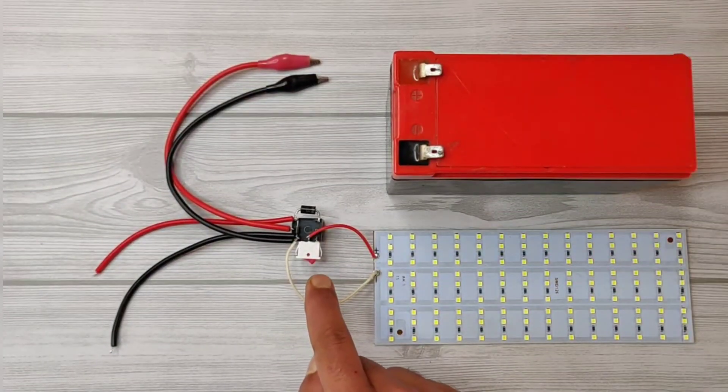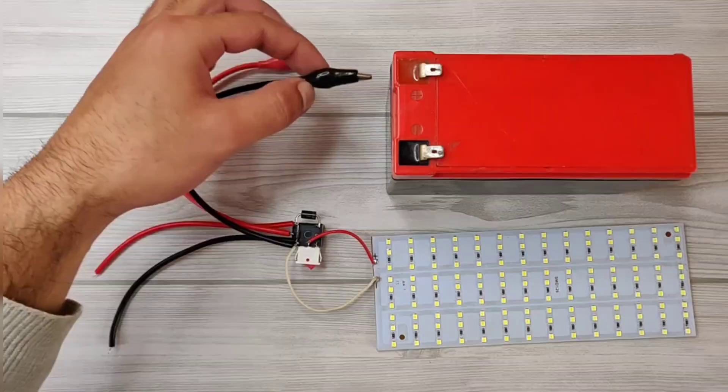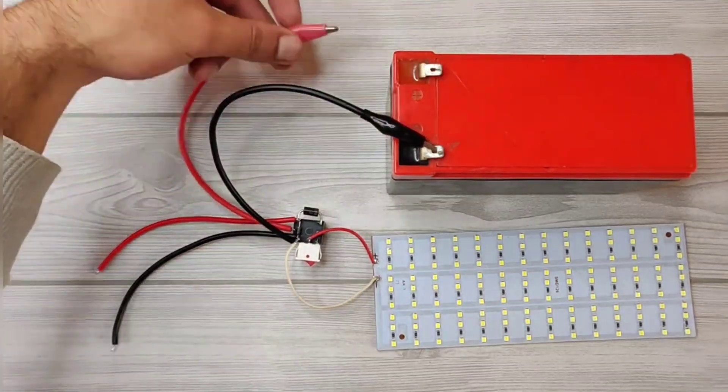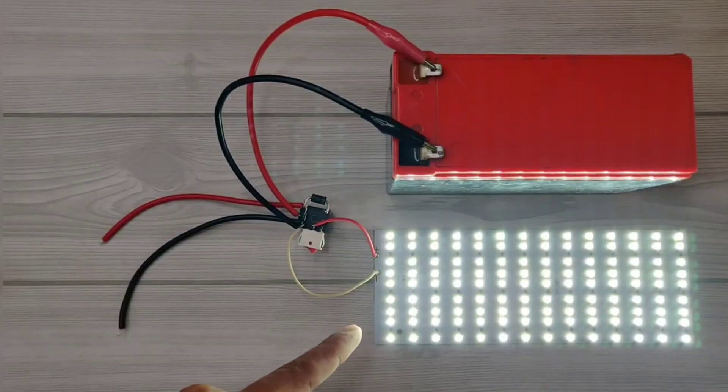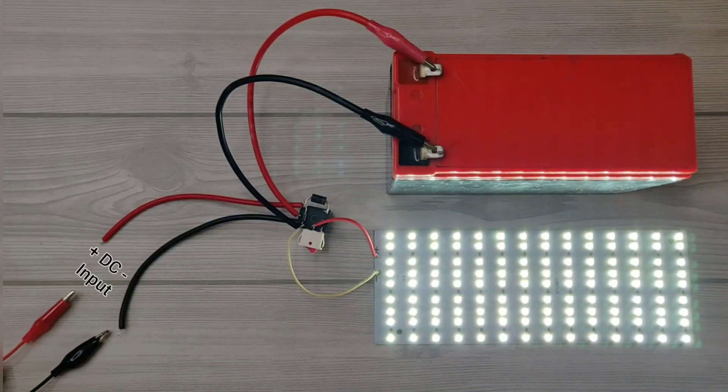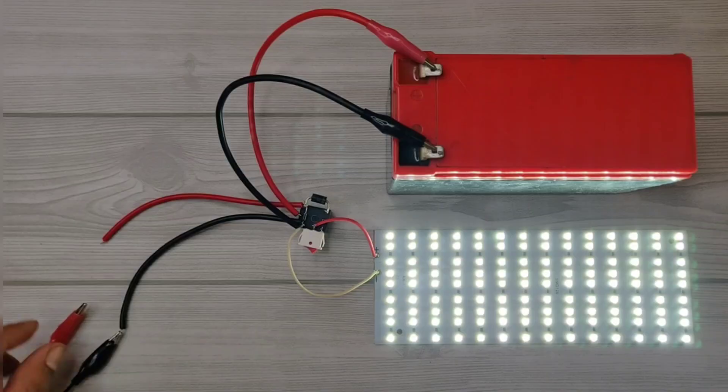As you can see automatic mode is on. Connect the circuit with battery. As you can see light turned on, and when we connect charger DC, light will turn off automatically.